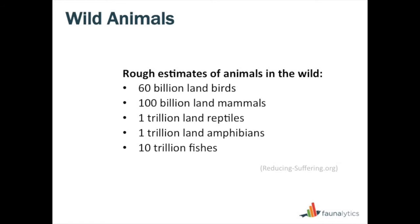The numbers get really big, and Brian also looks at insects. If we take into account bugs — and there's no good reason necessarily that we shouldn't, because even if they suffer at a much lower capacity, their numbers suggest their aggregate suffering is something we should consider — there are an estimated billion billion bugs on the planet, including insects, spiders, worms, and so forth. If we broaden that sphere, we're talking about a really large number of animals — so many that we probably can't even get our brains around it.